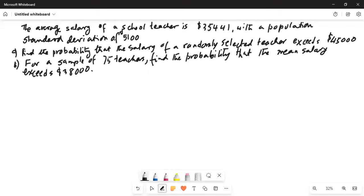Good afternoon, everybody. Today we are going to talk about a problem in sampling distribution. The average salary of a school teacher is $35,441 with a population standard deviation of $5,100. Find the probability that the salary of a randomly selected teacher exceeds $45,000. Part B: for a sample of 75 teachers, find the probability that the mean salary exceeds $38,000.